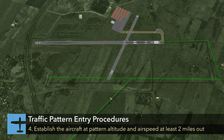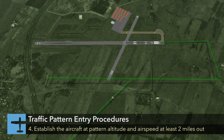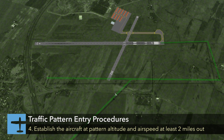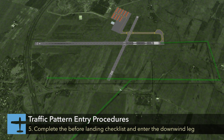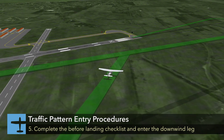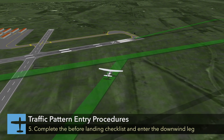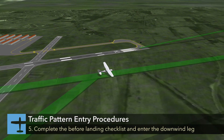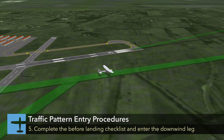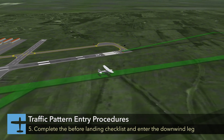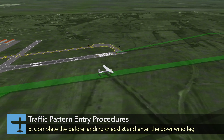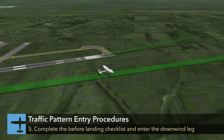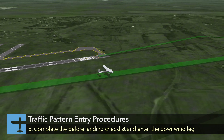Both pattern altitude and airspeed should be established approximately two miles from the pattern. Complete the before landing checklist and enter the downwind leg approximately one-half to three-quarters of a mile from the active runway. Pattern altitude is to be maintained unless traffic separation or ATC dictate otherwise.